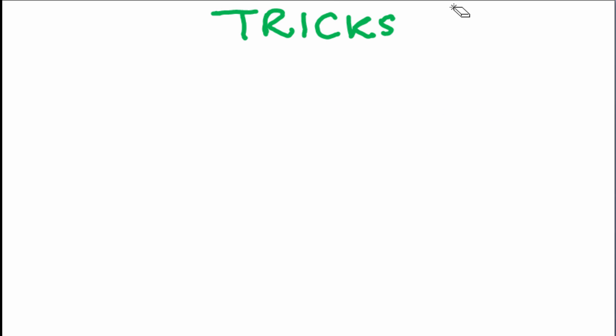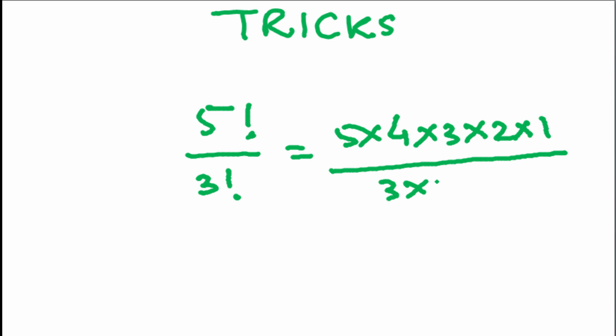But what if it is written 5 factorial by 3 factorial, which will be 5×4×3×2×1. And 3 factorial will be 3×2×1. Now see, this part and this part is same.